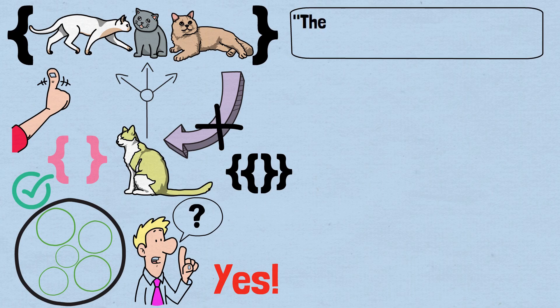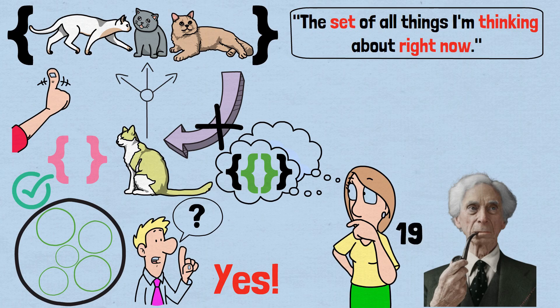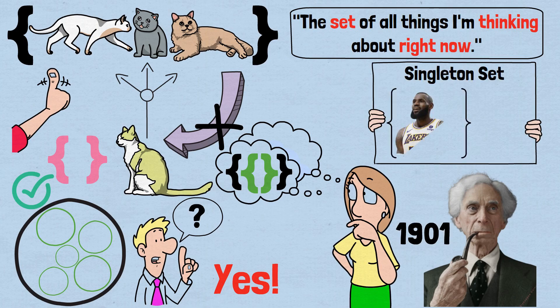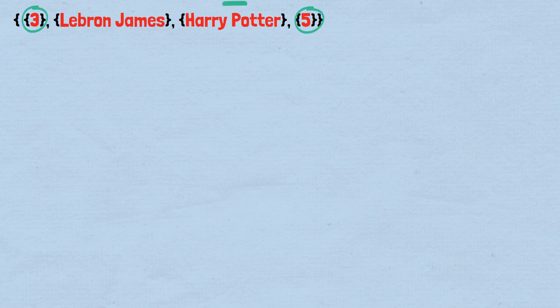Or consider the set of all things I'm thinking about right now. If I'm currently thinking about that very set, then it contains itself. Following Russell's thought process in 1901, let's consider all the sets that do not contain themselves. The singleton set {LeBron James} doesn't contain itself because it only contains LeBron, not any sets. The set of all cats doesn't contain itself because it's not a cat. The set of all singleton sets doesn't contain itself because it has many members, not just one. So it's not a singleton set.